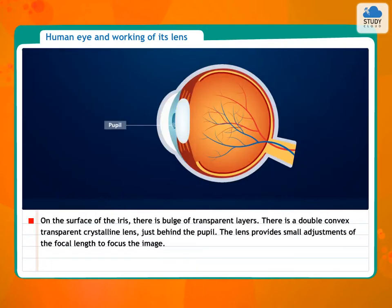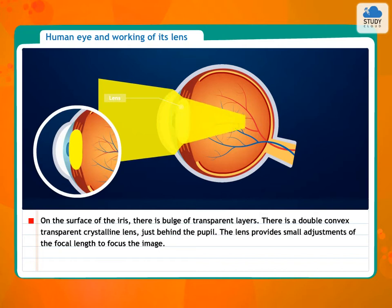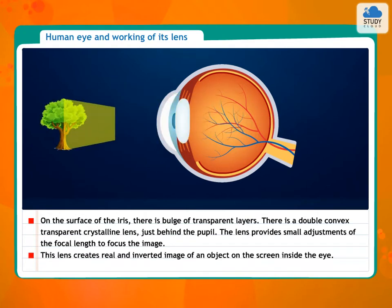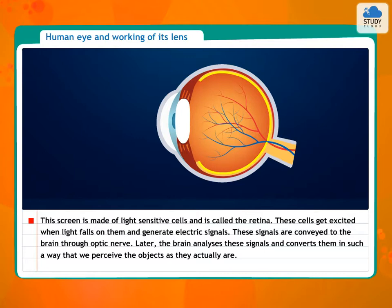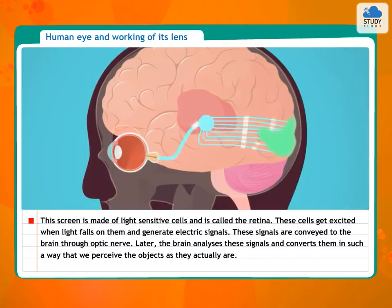On the surface of the iris, there is a bulge of transparent layers. There is a double convex transparent crystalline lens just behind the pupil. The lens provides small adjustments of the focal length to focus the image. This lens creates a real and inverted image of an object on the screen inside the eye. This screen is made of light-sensitive cells and is called the retina. These cells get excited when light falls on them and generate electric signals. These signals are conveyed to the brain through the optic nerve.